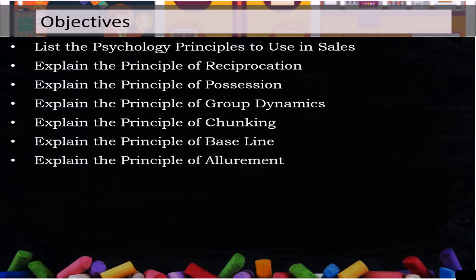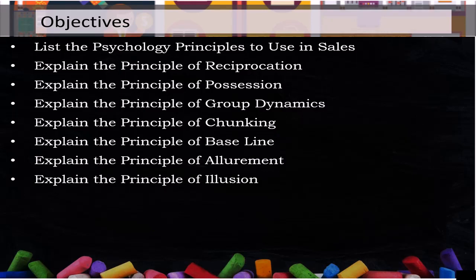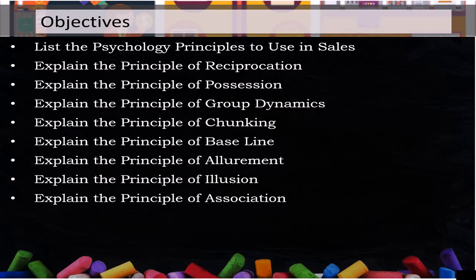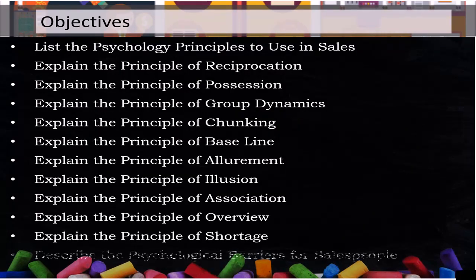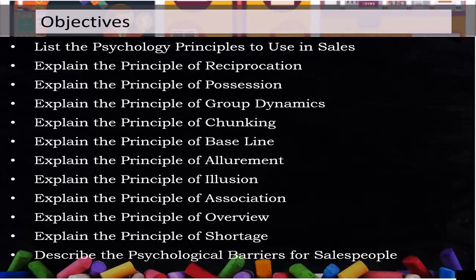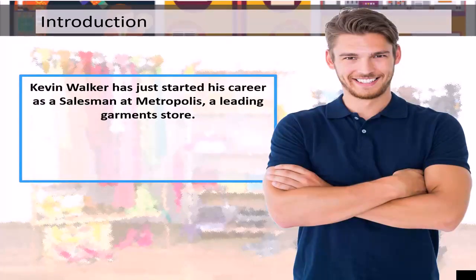Explain the principle of alignment, explain the principle of illusion, explain the principle of association, explain the principle of overview, explain the principle of shortage, and describe the psychological barriers for salespeople.